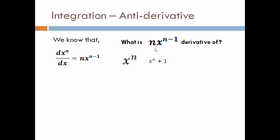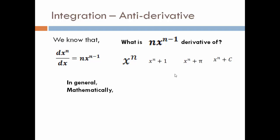What about x raised to n plus 1? Since 1 is a constant, its differentiation will be 0. So the differentiation of x raised to n plus any constant — let it be pi, 1, or infinity — will still be equal to n times x raised to n minus 1.